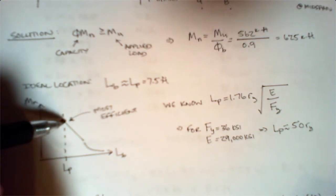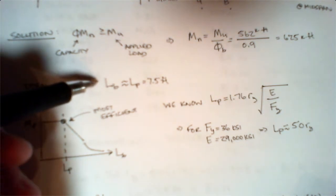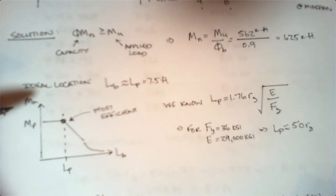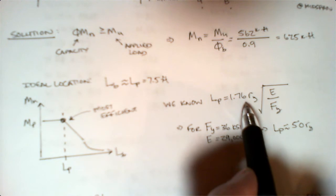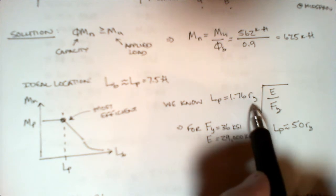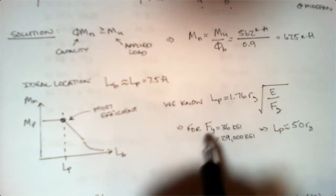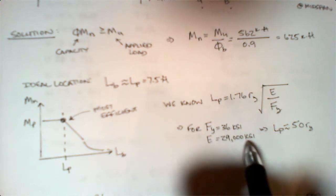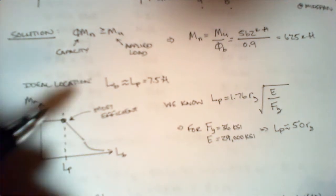This point here was kind of a sweet spot for us because this is the most efficient use of the material that we have. We know that Lb is seven and a half feet, and I know the equation for Lp is 1.76 ry times the square root of E over Fy.